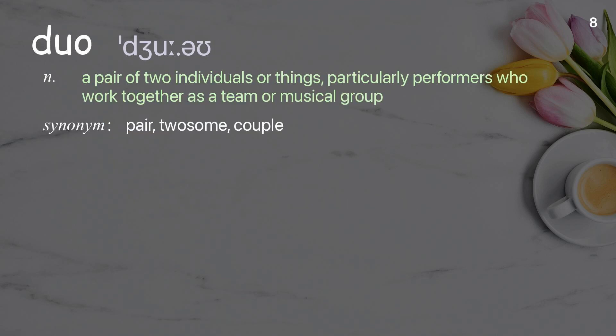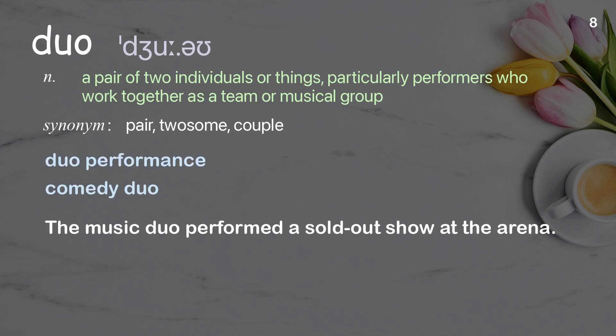Duo: a pair of two individuals or things, particularly performers who work together as a team or musical group. Examples: duo performance, comedy duo. The music duo performed a sold-out show at the arena.